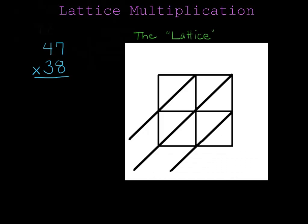It looks like this. This box is a lattice which is set up to do a two-by-two problem. What I'll do is I'll write one number across the top — 47 — lining them up along the columns, and I'll write the other number down the right-hand side, lining the numbers up against the rows.